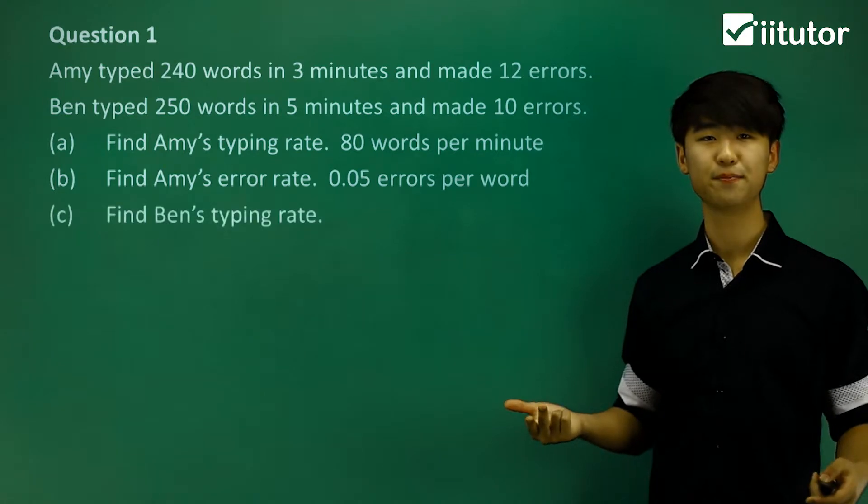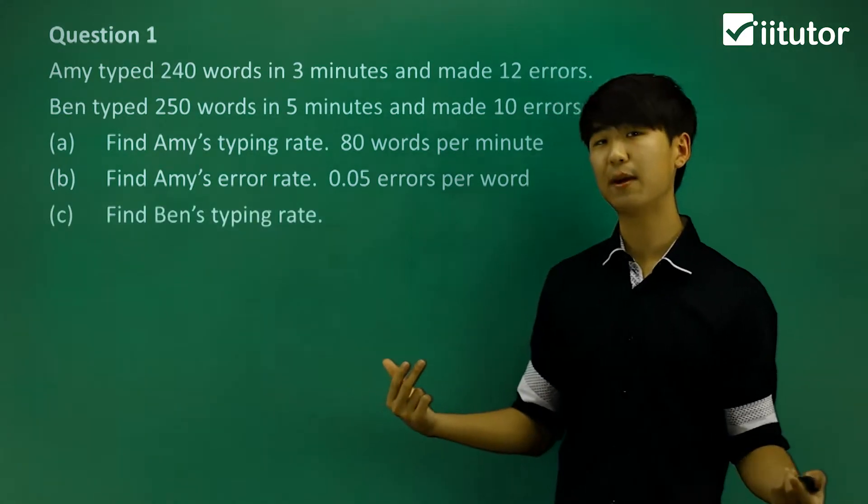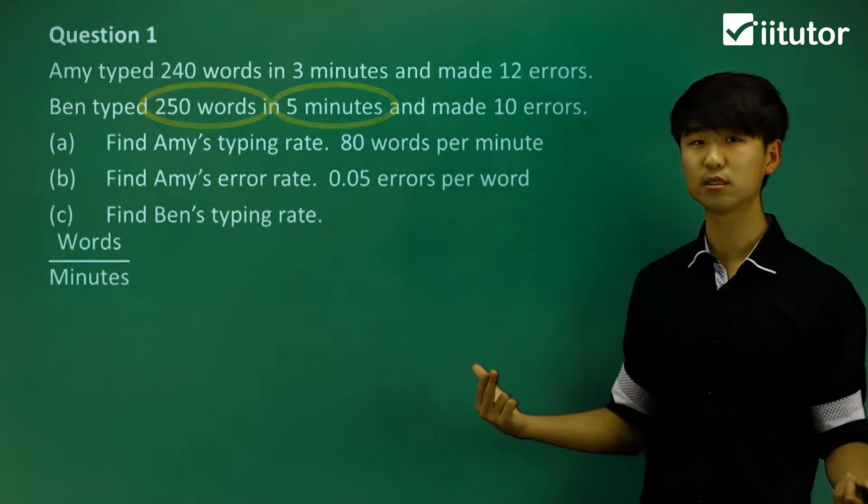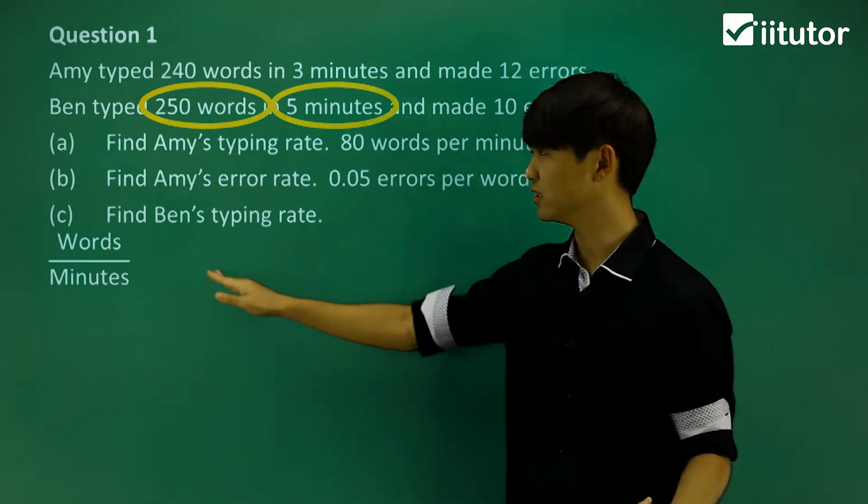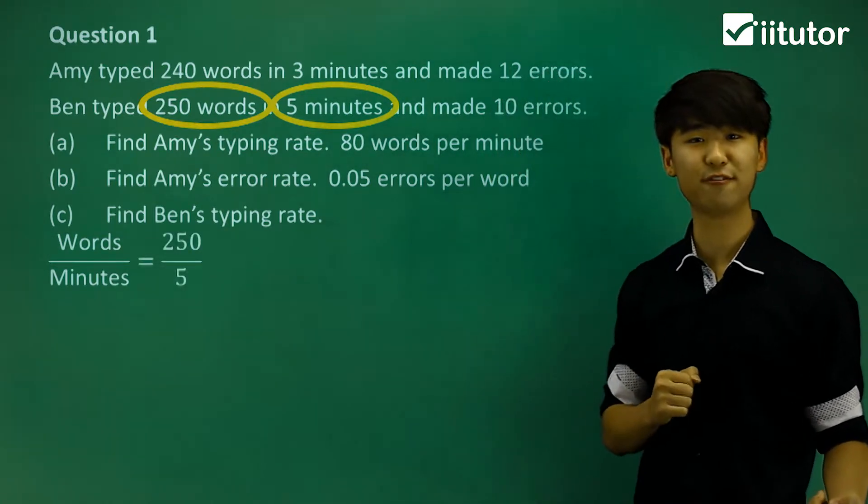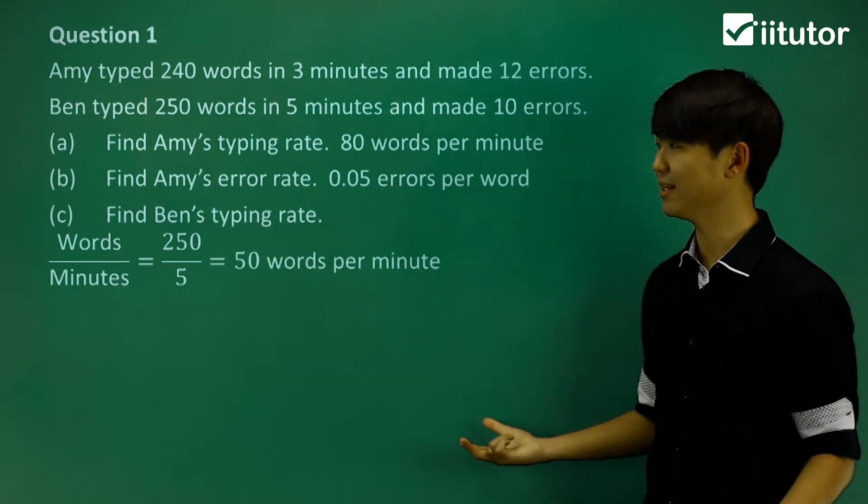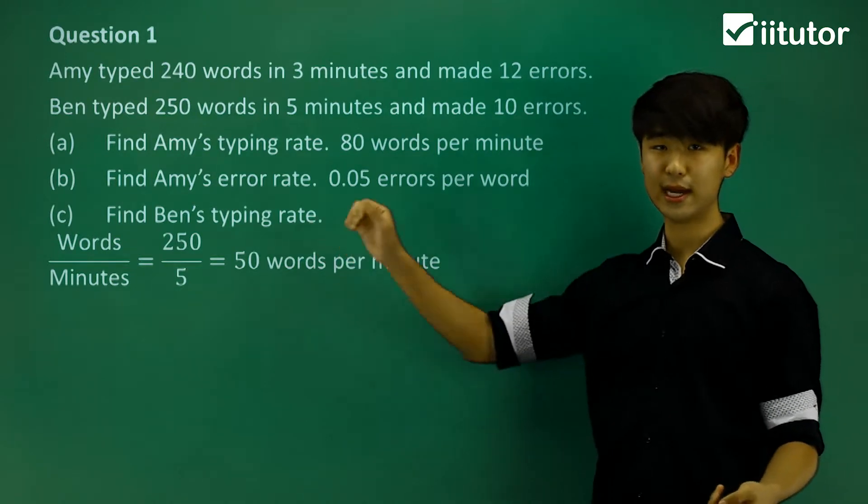Let's move on to Ben. So find Ben's typing rate. Again, rate, we're going to be looking at how many words per minute he was able to do. 250 words in five minutes. Let's put those in. 250 words in five minutes. We can see his rate was 50 words per minute. So he had 50 words per minute as his typing rate.